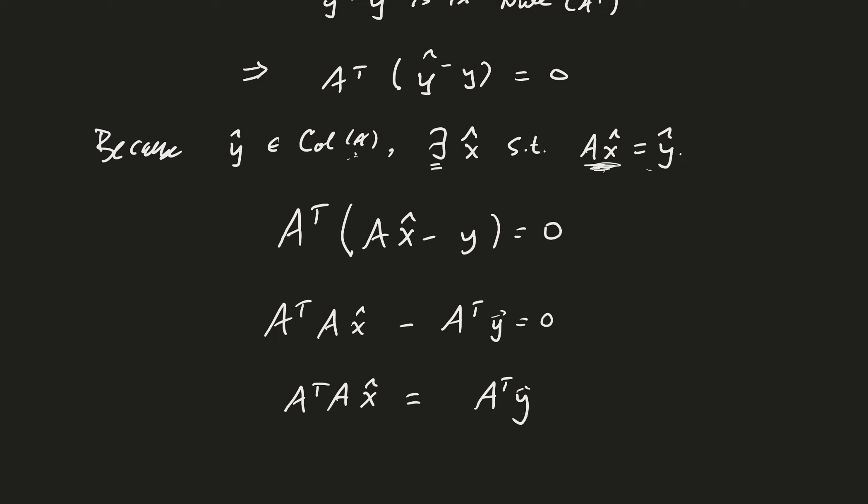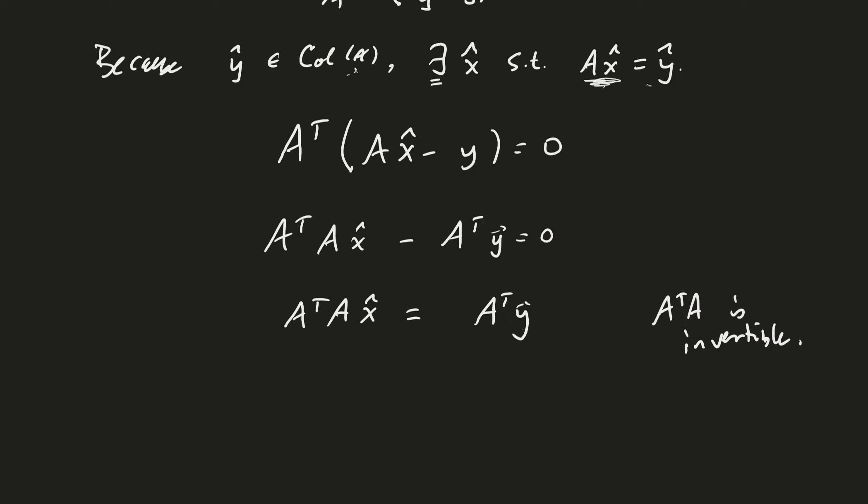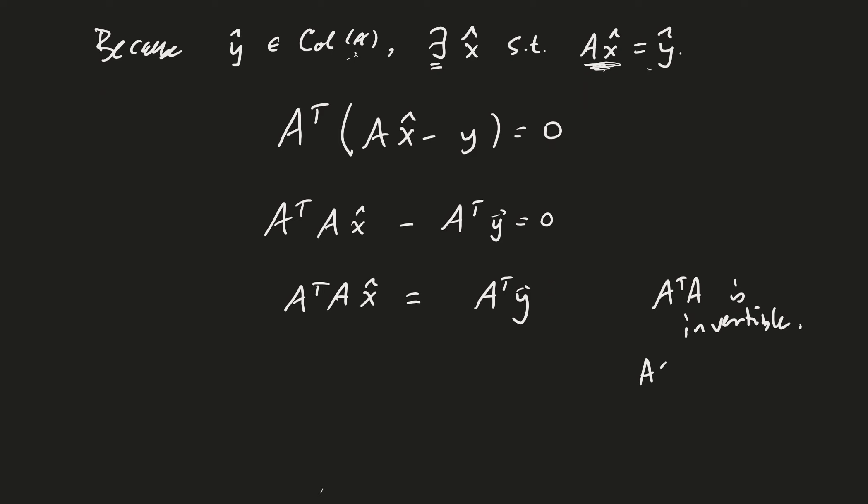All right. Now, I'm going to argue that A transpose A is invertible. And the only way I'm going to be able to say that is if the null space of A is just the zero vector. And so, I'm going to assume that.